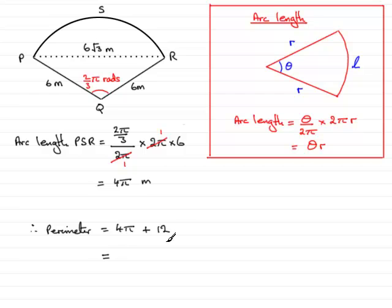And if we work this out on the calculator, what you get is 24.566 and so on. And if we give this now to one decimal place, this would be 24.6 meters.